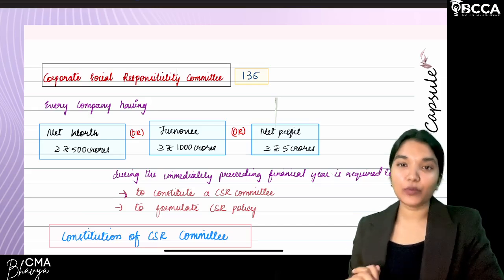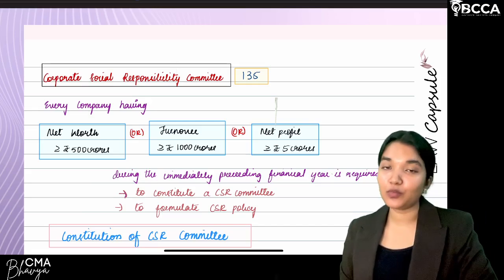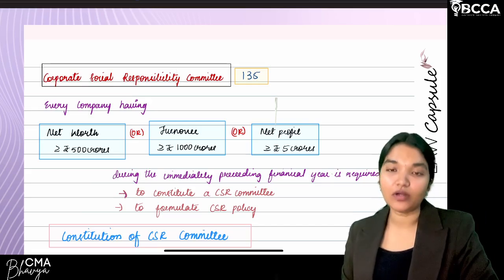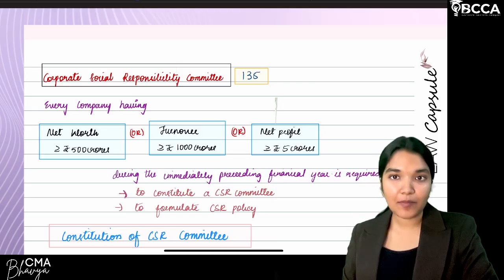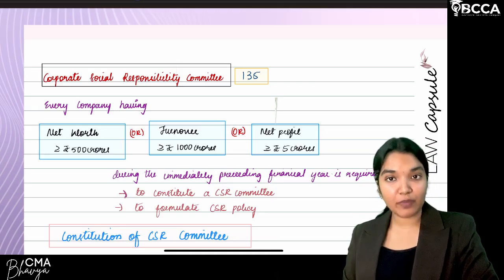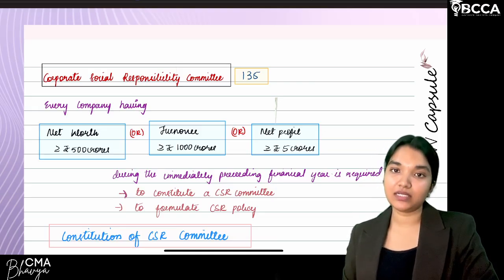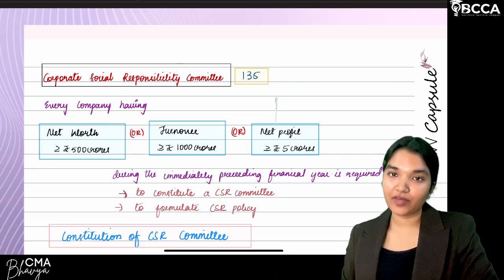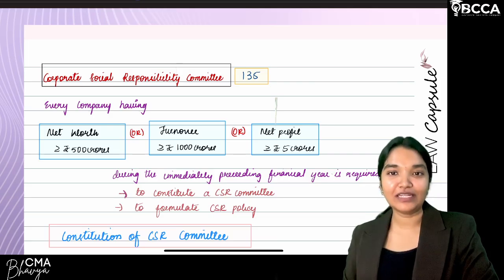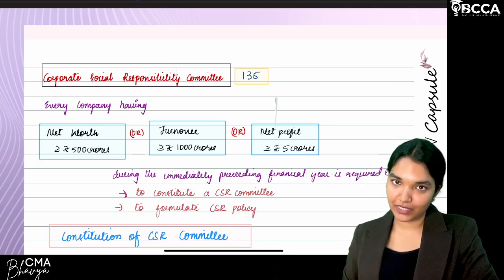Let's start with a quick revision of the most important section of the Companies Act, which has been asked many times in past final question papers. It is expected to be asked in the December 2025 attempt as well. So let's have a quick revision of Section 135 — Corporate Social Responsibility.